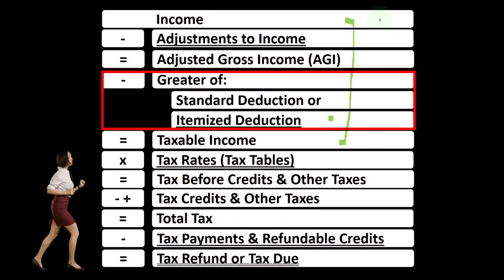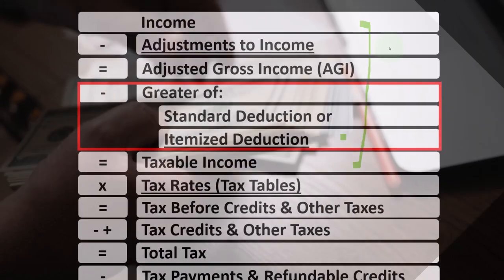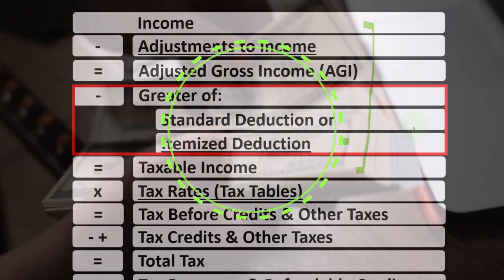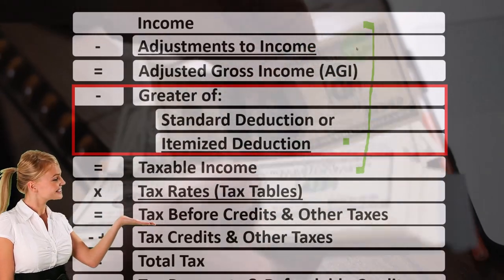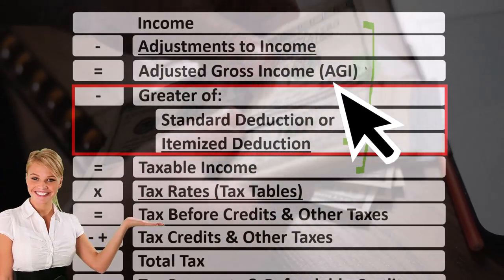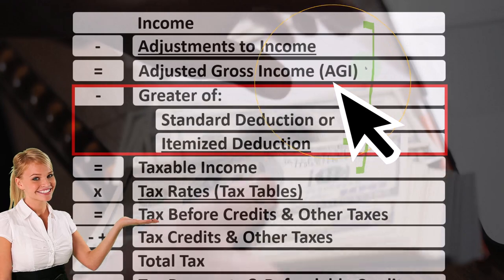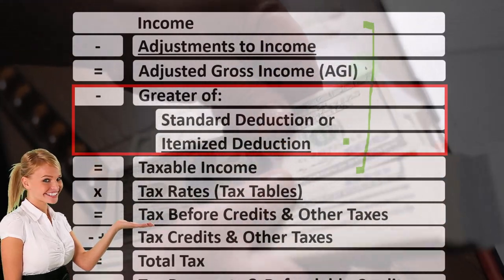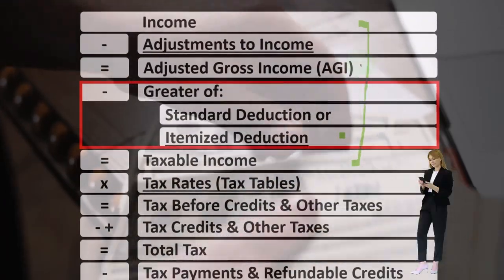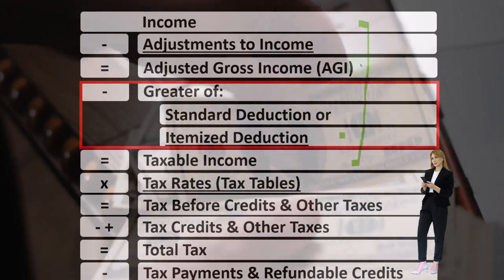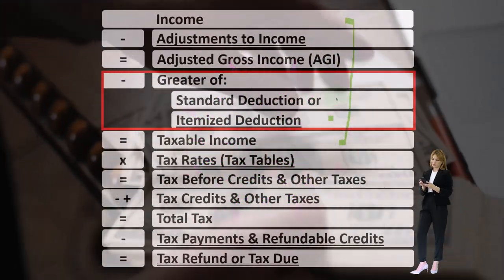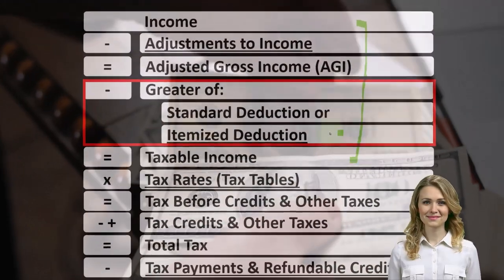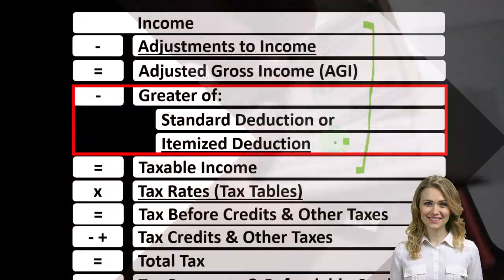In prior presentations, we talked about what needs to be included in income. We talked about the above-the-line deductions as opposed to the below-the-line deductions we're doing now, otherwise called adjustments to income to get to that subtotal AGI — an important subtotal, because that's the one typically used when we have income phase-outs for certain deductions and credits. Now we're on the below-the-line deductions, the greater of the standard or itemized, focusing specifically on the itemized deductions.